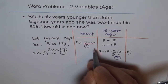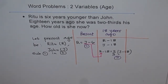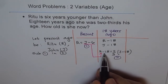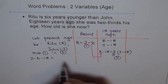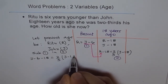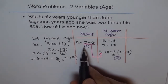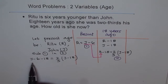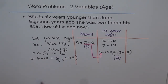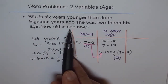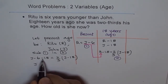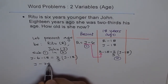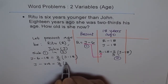Substituting R = J − 6 into equation two, we replace R with J − 6 to get: (J − 6) − 18 = (2/3)(J − 18). This is the combined equation using equations one and two, and it contains only one variable, J — John's age. Simplifying the left side: J − 24 = (2/3)(J − 18).